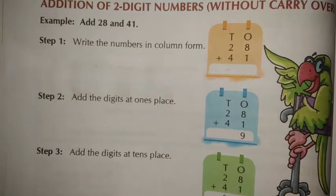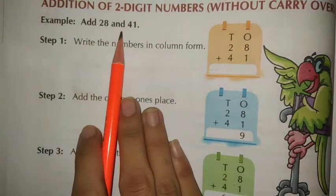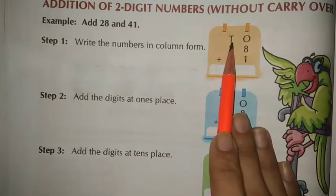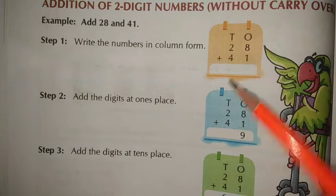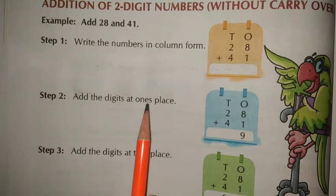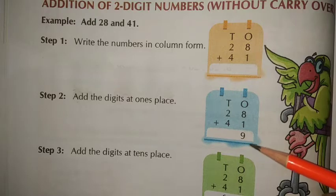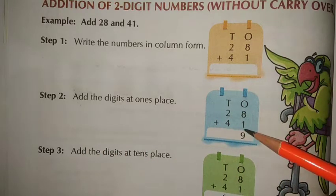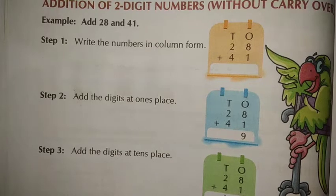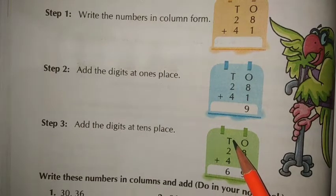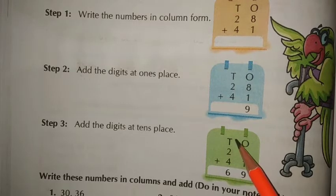Addition of two digit numbers without carry over. Let's see the example. Add 28 and 41. यहाँ पर 10s और 1s columns में देखो. पहले हमें उसको column form में लिखना है. Then add the digits at the 1s place first. 1s place में 8 and 1, sum हुआ 9. Then add the digits at the 10s place: 2 and 4, sum is 6. पहले 1s का, then after 10s का.